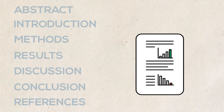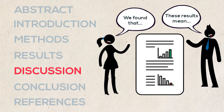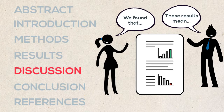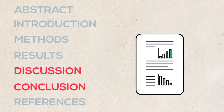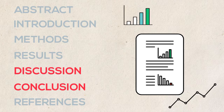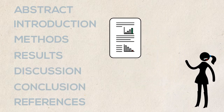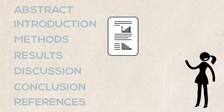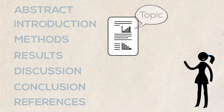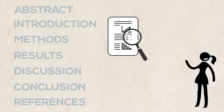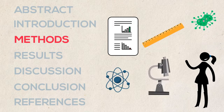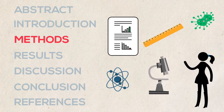Then read the discussion of the results and the author's conclusion to understand what the data, figures, and graphs mean. By now you should know if this article is useful to your research. If it is, you can go back through the rest of the article for the methods and technical information about the study.